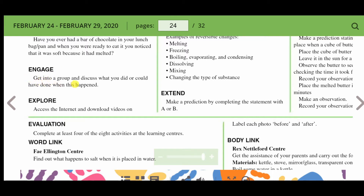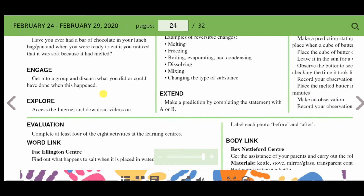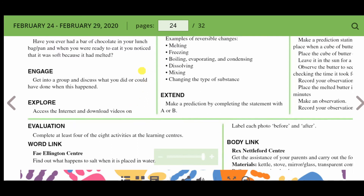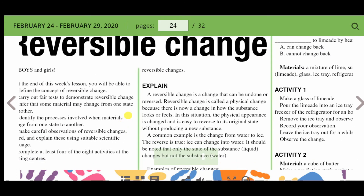Engage: get into a group and discuss what you did or could have done when this happened. Explore: access the internet and download videos on reversible changes.